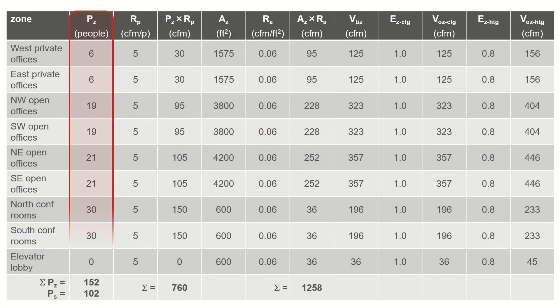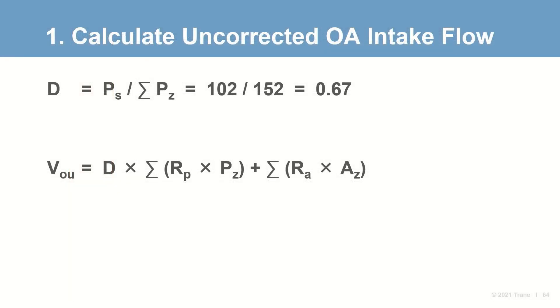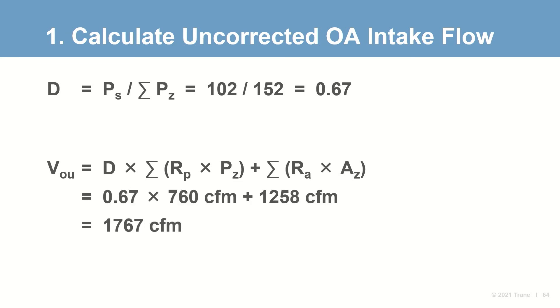This diversity can be accounted for when designing a multiple zone recirculating system. Summing the design population for each zone P-sub-Z gives 152 people, but the design team estimates the largest number expected to occupy this floor is 102 people — the design system population P-sub-S as defined by the standard. So the Occupant Diversity Ratio D is calculated to be 0.67, and the uncorrected outdoor air intake flow V-sub-OU is 1,767 CFM.